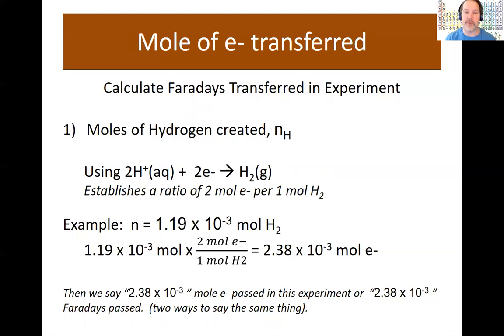I give an example here of 1.19 times 10 to the minus 3 moles, multiplying by the ratio, my moles of hydrogen can cancel out, and I'll be left with 2.38 times 10 to the minus 3 moles of electron. Now in the lab and in chemistry, we can say it a couple different ways. This is the number of moles of electrons transferred, or this is the number of Faraday's passed in the experiment.